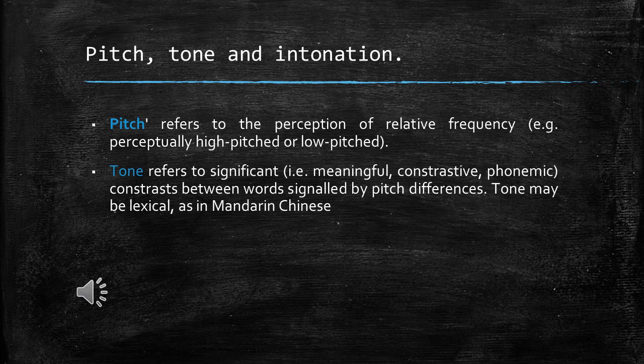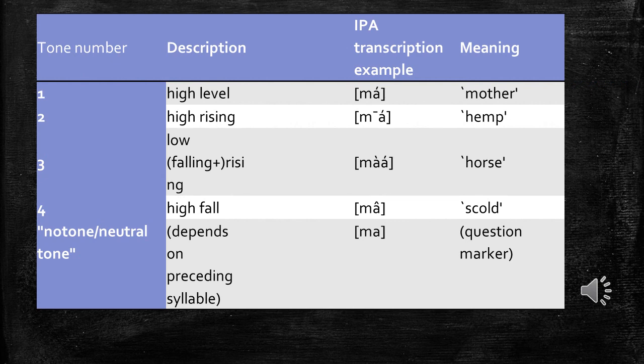Tone may be lexical, as in this table of phonetic stress for Mandarin Chinese. Tone 1: high level — 'mā' meaning 'mother.' Tone 2: high rising — 'má' meaning 'hemp.' Tone 3: low falling plus rising — 'mǎ' meaning 'horse.' Tone 4: high falling — 'mà' meaning 'scold.' Tone 5: neutral/neutral-toned — depends on preceding syllable.